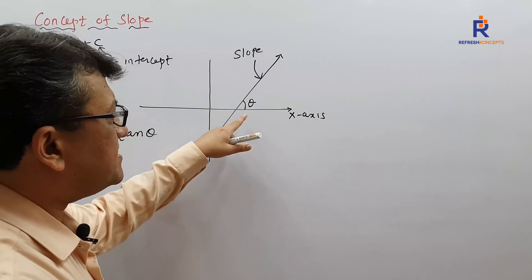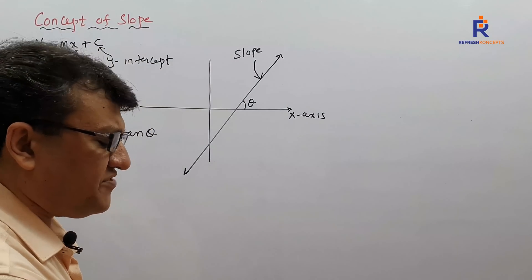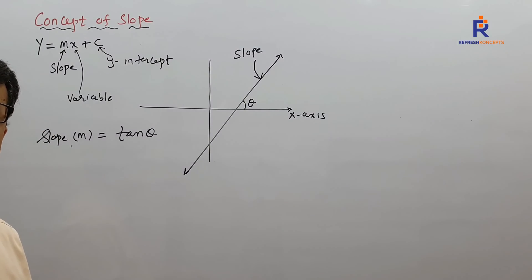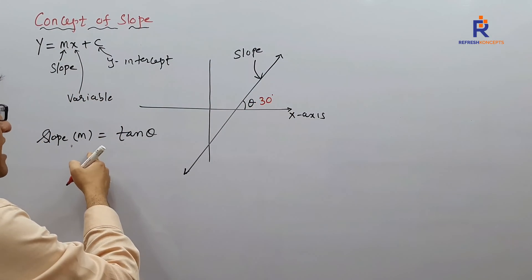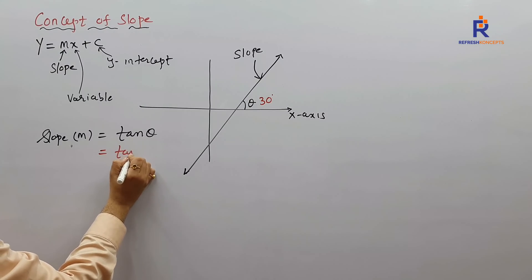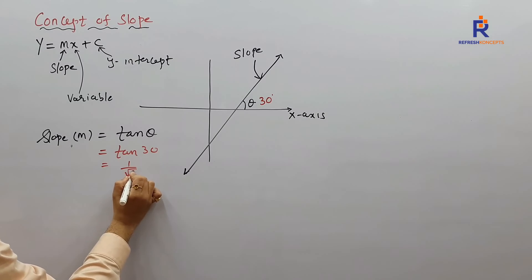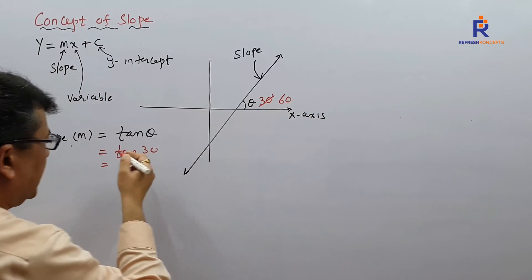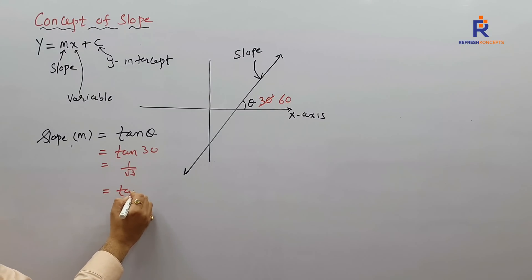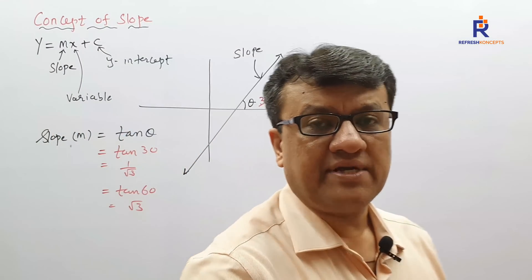For instance, if this particular line makes an angle of 30 degrees, I shall write tan 30, which is 1/√3. If it makes 60 degrees, I shall say tan 60, which is √3. I hope children are understanding this — slope of a particular line is nothing but tan θ.